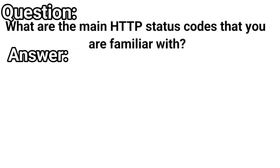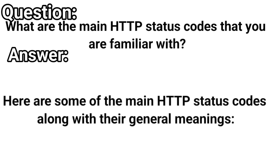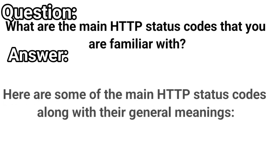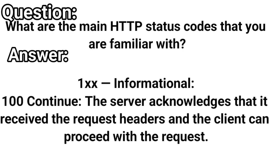What are the main HTTP status codes that you're familiar with? Here is a list of the main status codes as well as their general meanings. Any status code in the 100 series is informational. 100 Continue means the server acknowledges that it received the request headers, and the client can proceed with the request.